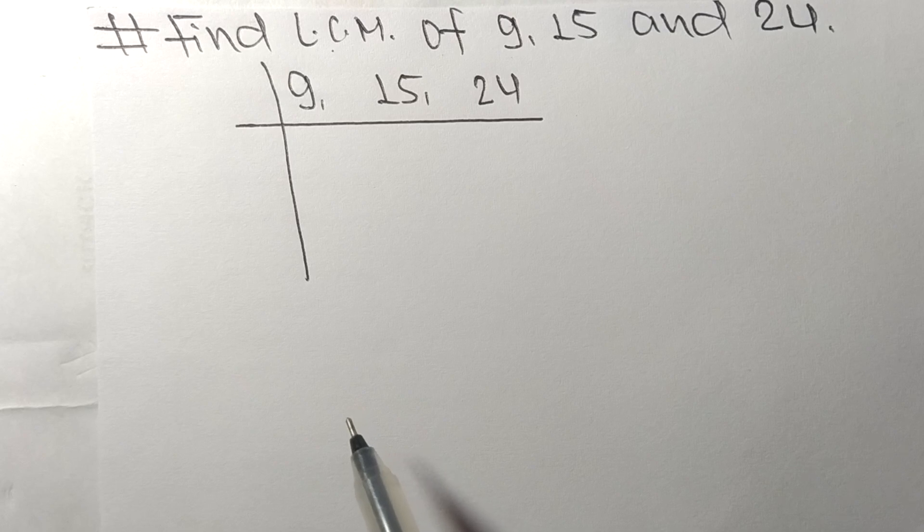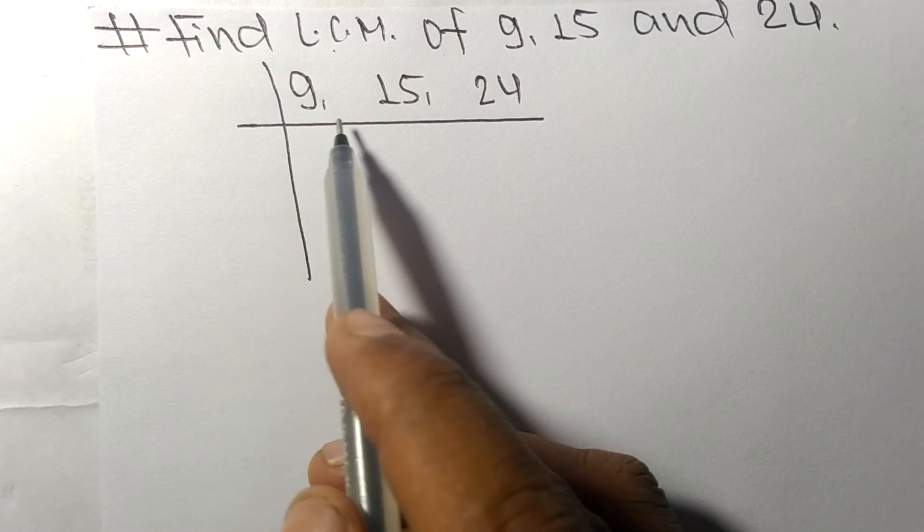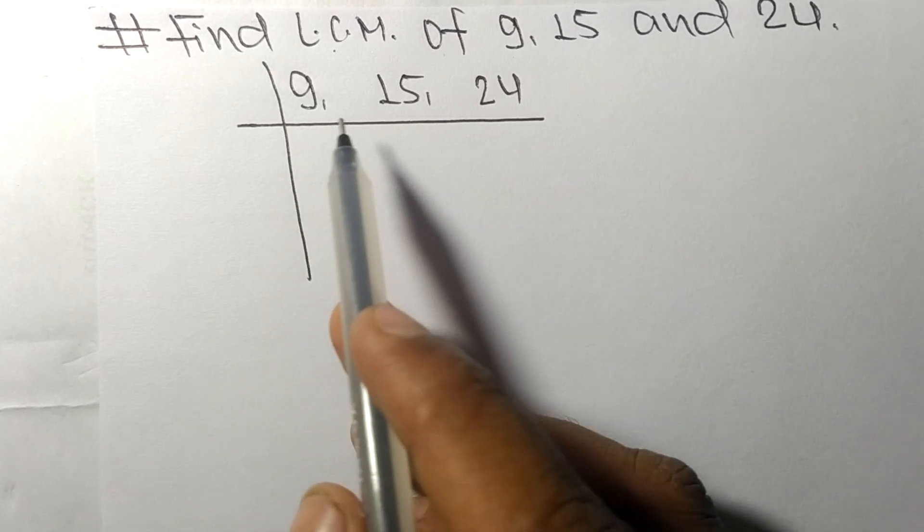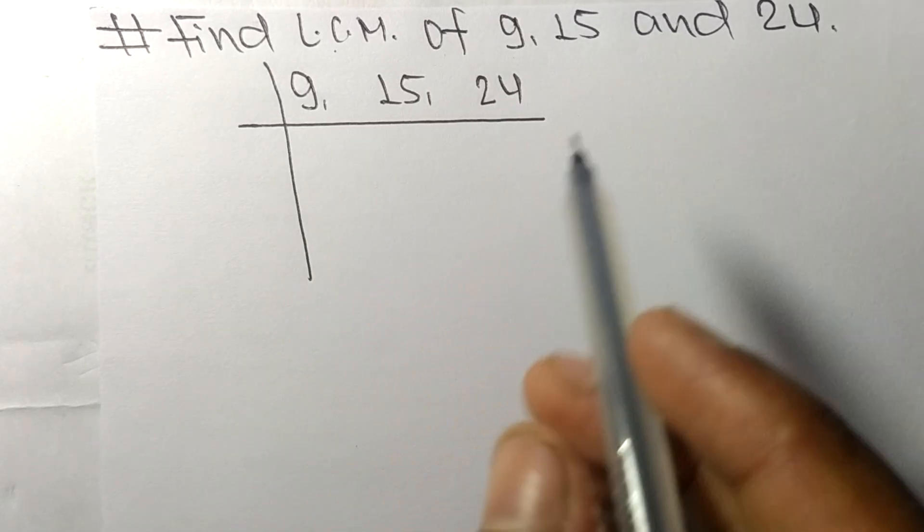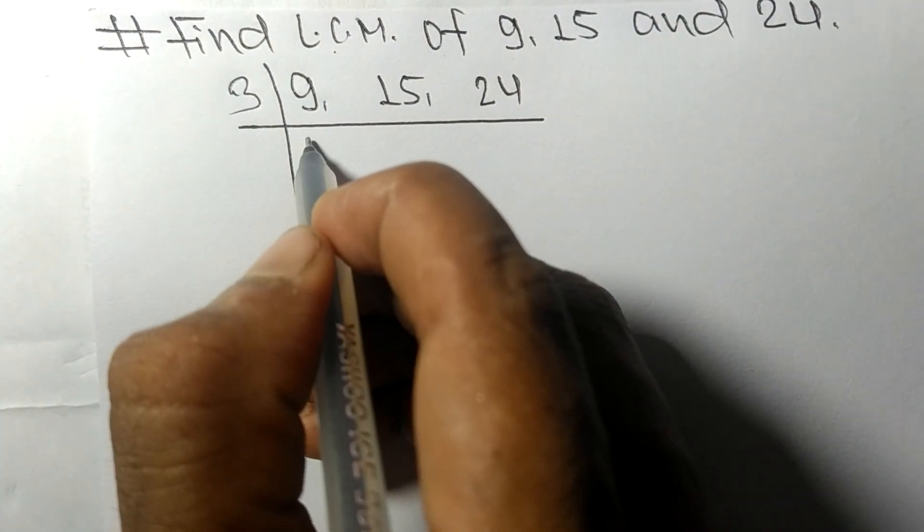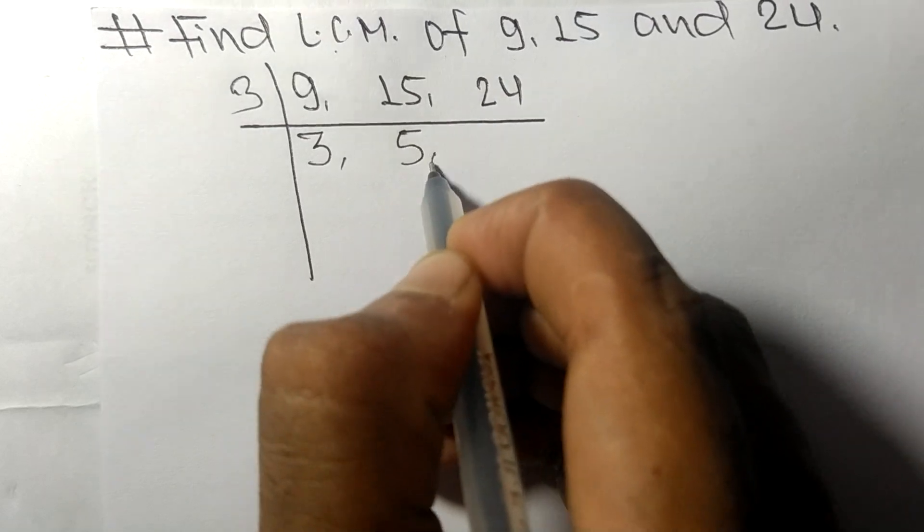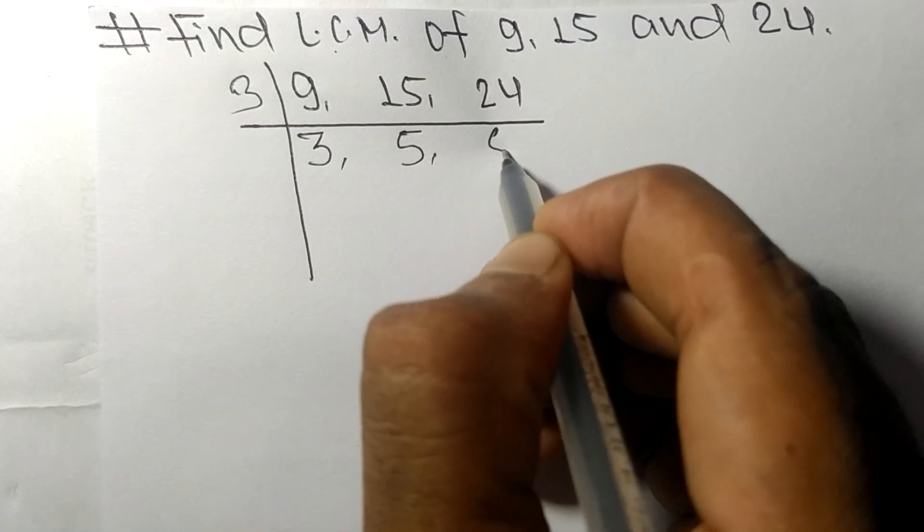To find LCM, we have to choose the lowest number that can exactly divide at least any two of these numbers. These numbers are divisible by 3: 3 times 3 means 9, 3 times 5 means 15, 3 times 8 means 24.